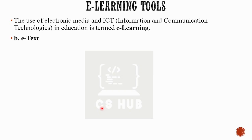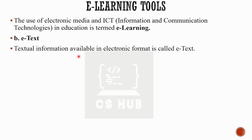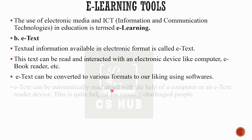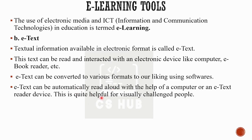Next is e-text. E-text is electronically available text in electronic format. Text means letters and words. This text can be read and interacted with on an electronic device like a computer, books reader, etc. E-text can be converted to various formats to our liking using software. E-text can also be automatically read aloud with the help of a computer or an e-text reader device, which is quite helpful for visually challenged people. Special reading software and e-text reader devices are used for this purpose.